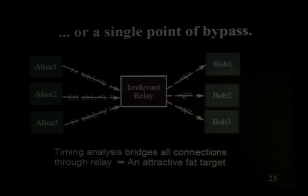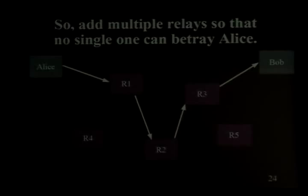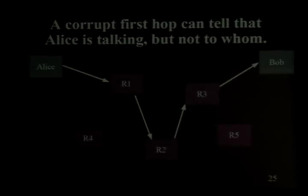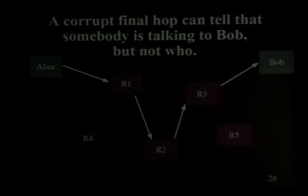The goal of TOR is to distribute trust over multiple relays so no single relay learns about both Alice and Bob. If R1 is bad, he knows Alice is using TOR but doesn't know where she's going — he doesn't know about Bob. If R3 is bad, he knows somebody is talking to Bob but doesn't know who. If they're both bad, then we lose because they can match things up — we'll talk about that more in a bit.